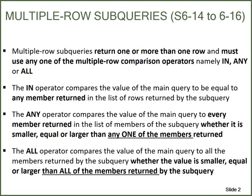The ANY operator compares the value of the main query to every member returned in the list of members of the subquery, whether it is smaller, equal, or larger than any one of the members returned. The ALL operator compares the value of the main query to all the members returned by the subquery, whether the value is smaller, equal, or larger than all of the members returned.